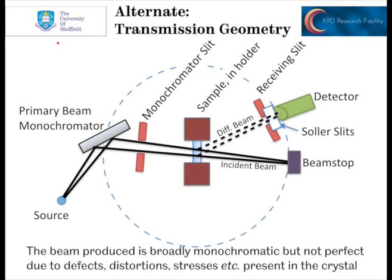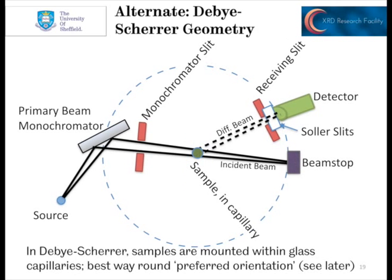We can also see a sample shown here in transmission mode, as it would be on our Stoe machines. After what we've talked about regarding absorption of X-rays, the sample thickness is going to be really crucial — if the sample is too thick, the beam won't go through and you won't see anything in the detector. We also have the option of the Debye-Scherrer geometry. This is where the sample is a powder — and it must be a powder — mounted inside a glass capillary. If you have preferred orientation in your sample, running in Debye-Scherrer geometry is the best way to address that. Hopefully this short video has given you a good idea of the different experimental setups available here in the XRD research facility, and some of the more common aberrations that can cause headaches in data analysis, along with advice on how to avoid them.